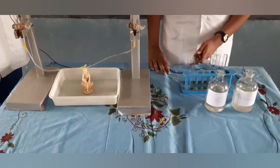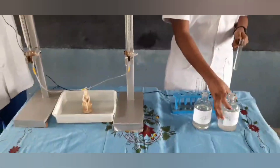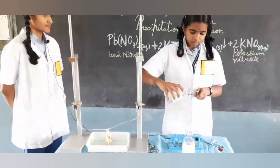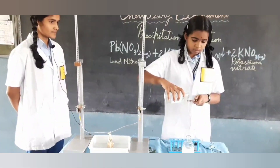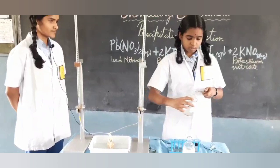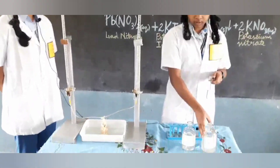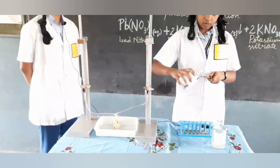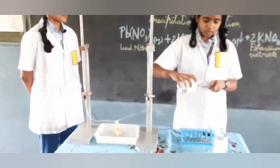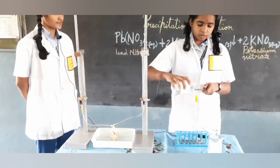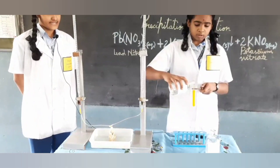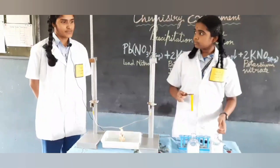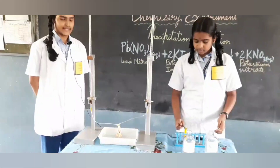Take a test tube and add lead nitrate to the test tube. Then add potassium iodide to the test tube. We can see that as soon as potassium iodide is added to the test tube, we get a yellow precipitate. This is lead iodide.